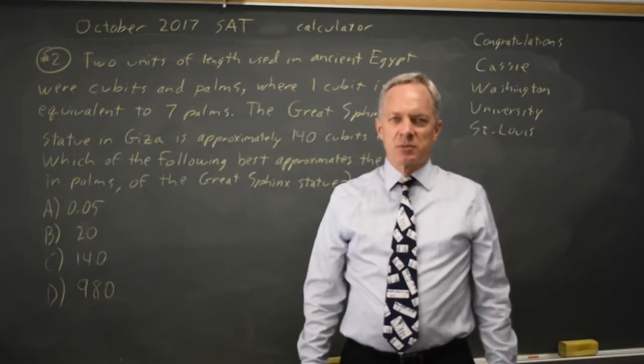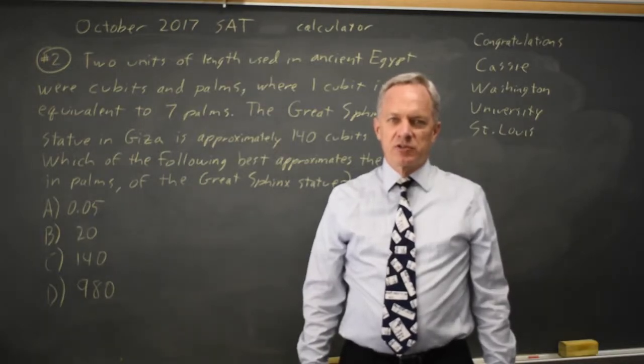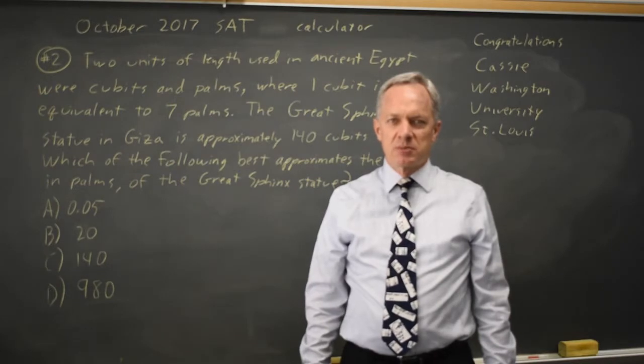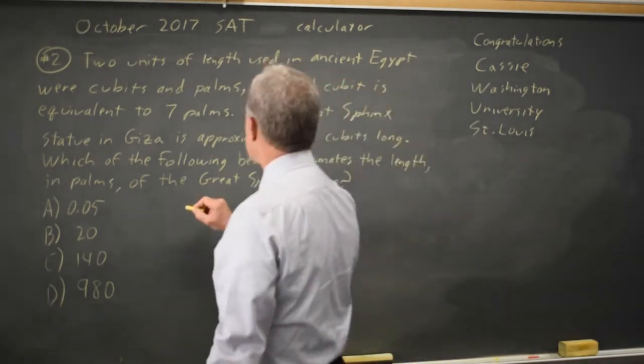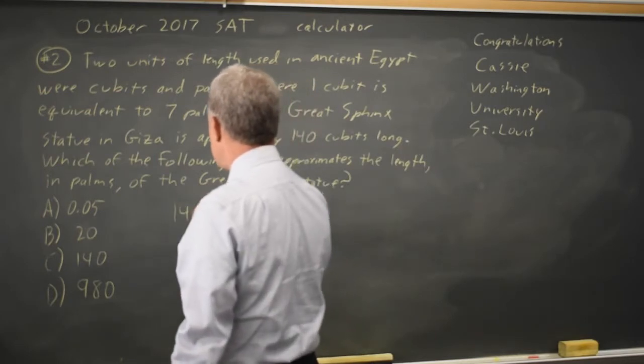This is calculator question number two. College Board asks us to convert from cubits to palms where one cubit is seven palms, and we're told that the Great Sphinx is 140 cubits.